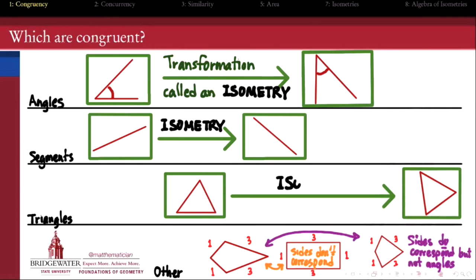Isometries, therefore, tell us how two congruent figures might be different from one another. Later on in our course, we'll have the opportunity to think about isometries in some more detail and sort of pull them apart into what kinds of isometries there are, how they work together with one another, what are their algebraic features.